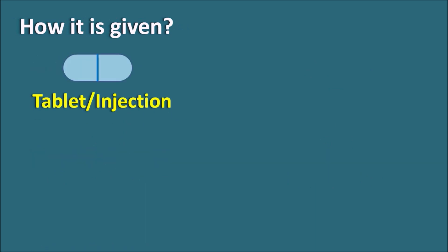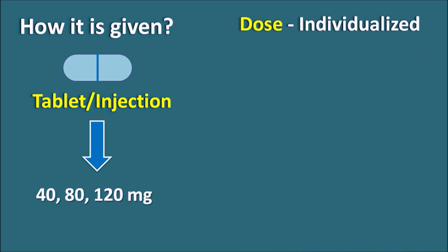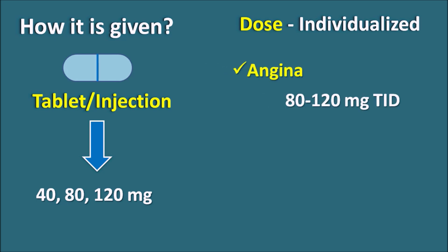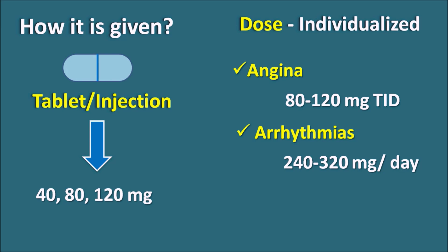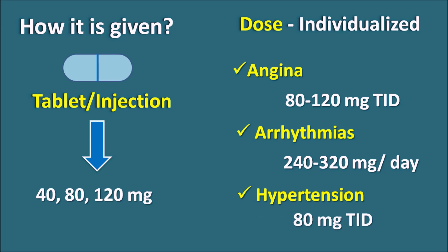How is it given? Verapamil is given as a tablet or injection. It is available at different doses as tablets — around 40, 80, and 120 mg. The dose is individualized based on patient conditions and clinical indication. For angina, the usual dose is around 80 to 120 mg three times daily. For arrhythmias, the dose may vary based on the type, commonly 240 to 320 mg per day in divided doses. For hypertension, a dose of 80 mg three times daily can be used. These doses are not fixed and are individualized based on patient conditions.